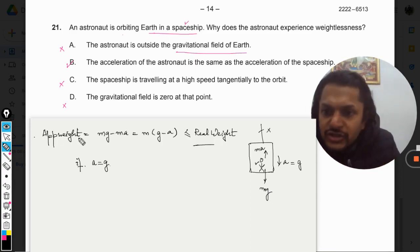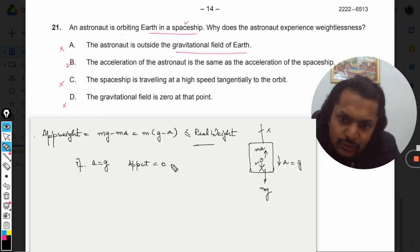You see what is the apparent weight in this case? So in this case the apparent weight comes out to be equal to zero. And that is why you create a case of weightlessness there in the lift.